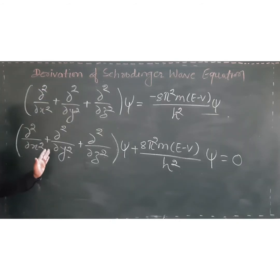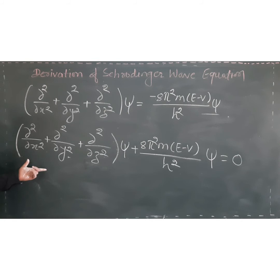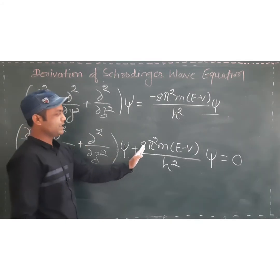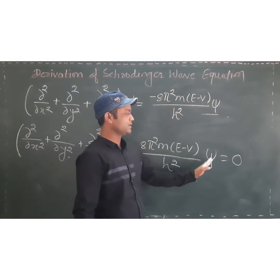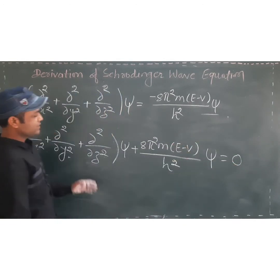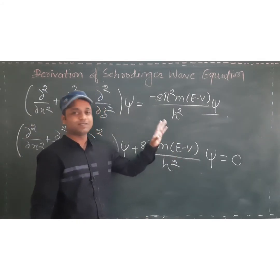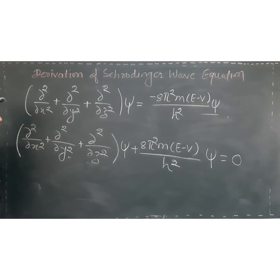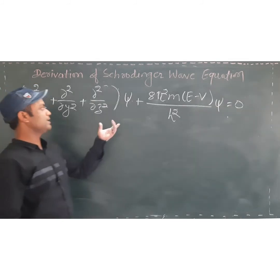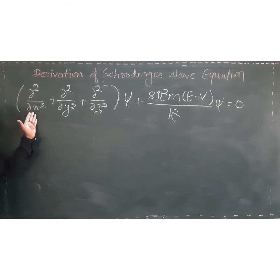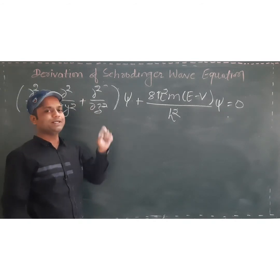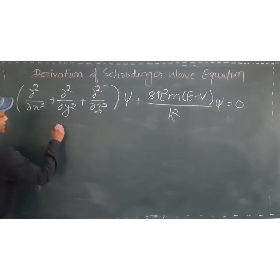This gives us the Schrödinger wave equation: del²ψ/del x² + del²ψ/del y² + del²ψ/del z² + [8π²m(E − V)/h²] ψ = 0. This is also written as: ∇²ψ + [8π²m(E − V)/h²] ψ = 0. To simplify further, the operator (del²/del x² + del²/del y² + del²/del z²) is written as ∇² (delta-square). Also, substituting h-cross (ħ = h/2π) to simplify the h terms.